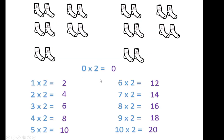All of these numbers, 0, 2, 4, 6, 8, 10, 12, 14, 16, 18, 20, they can be split into pairs. We call these numbers even numbers. They're divisible by 2.